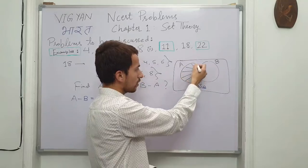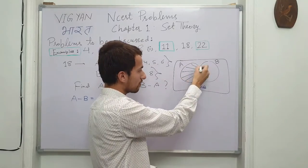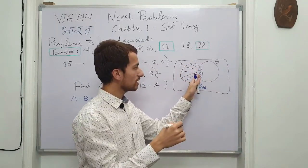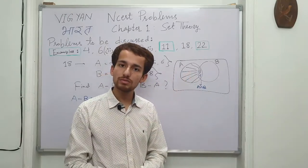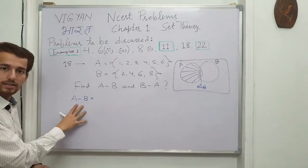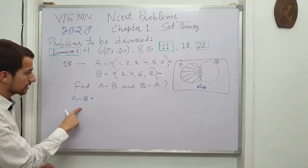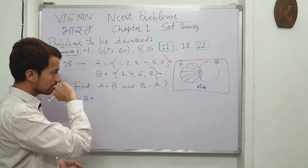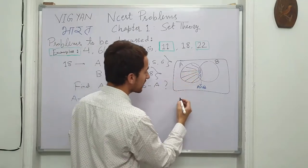So how can we find this? From the set A, if we can reduce or eliminate this common part A-intersection B, then definitely we will be able to find this part or there is an alternative definition to this.